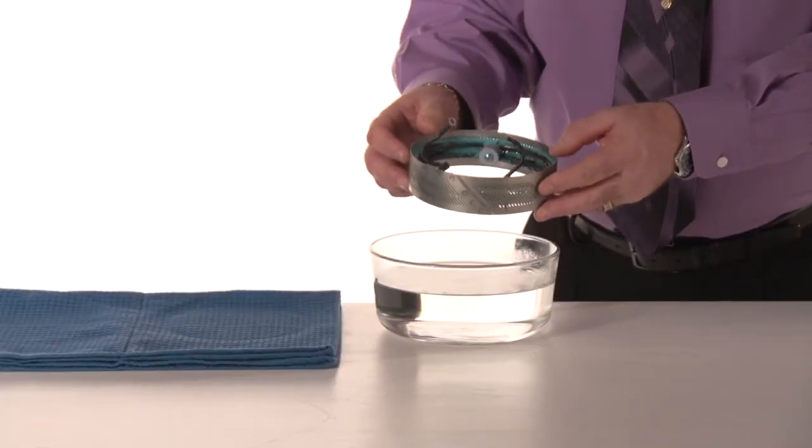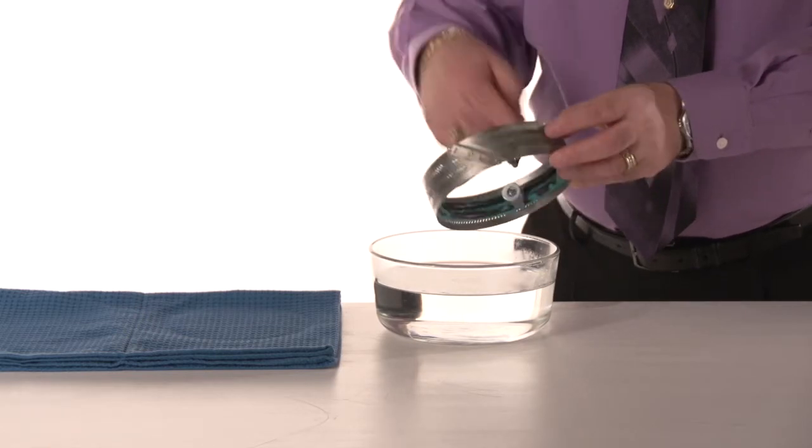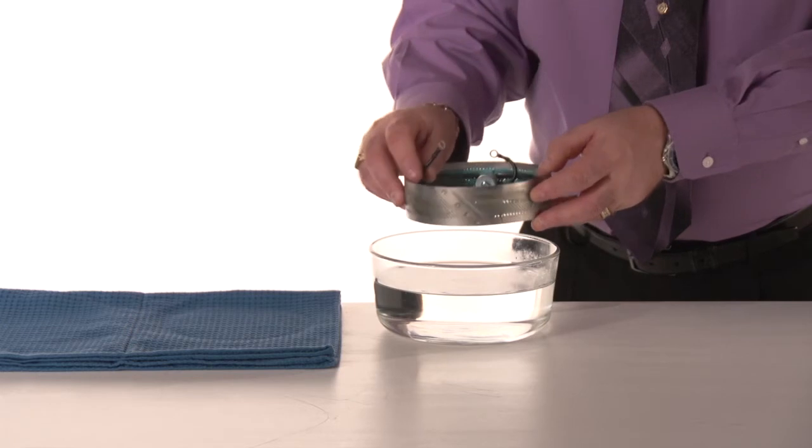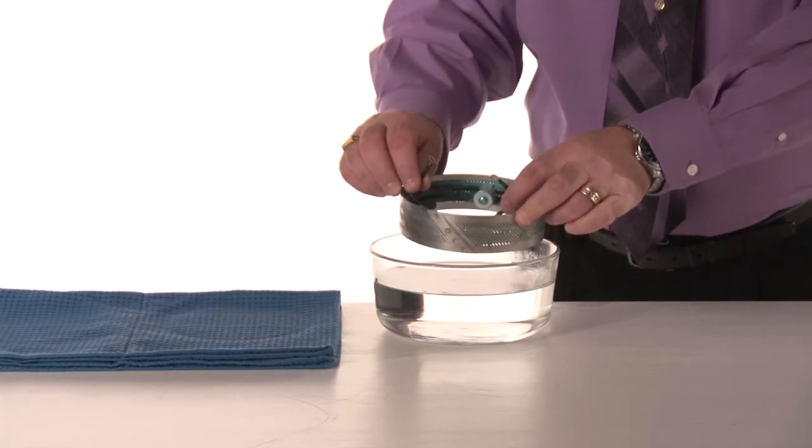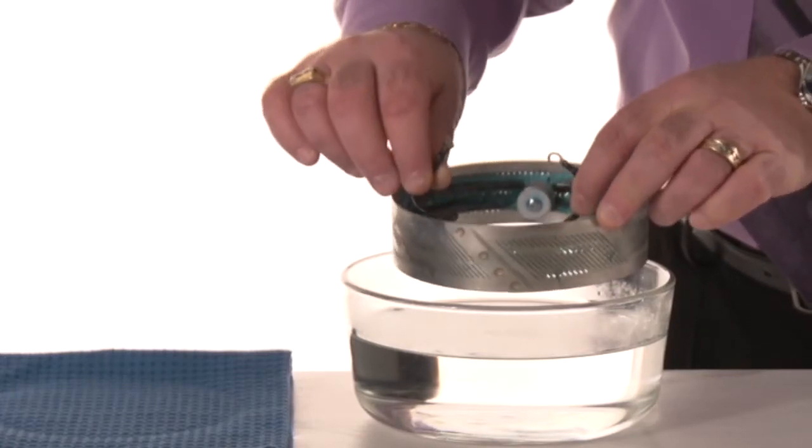The easiest way to do this is to either run it in the sink under hot water. You can use a soft bristled brush if you need to remove some of that buildup, or you can actually submerge it in a small bowl of hot water. Now make sure that these electrical leads stay up out of the water. We do not want to get them wet.